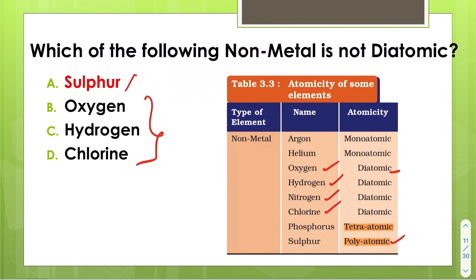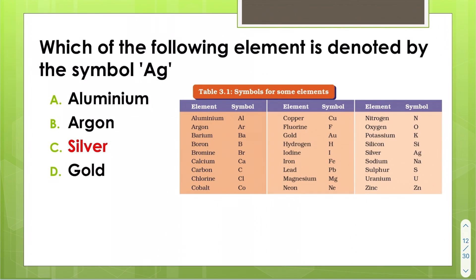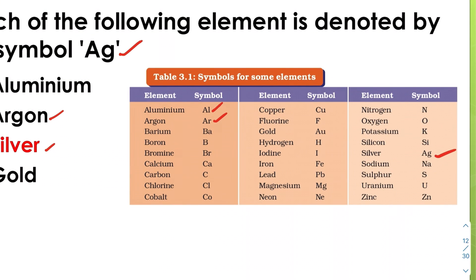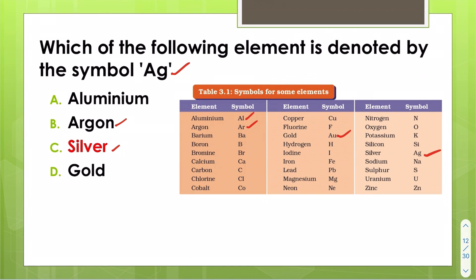The element denoted by the symbol Ag is silver. Other symbols: argon is denoted by Ar, aluminium by Al, and gold is denoted by Au.